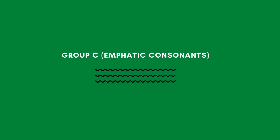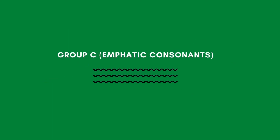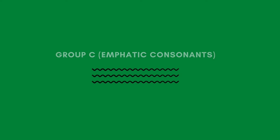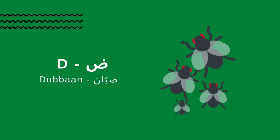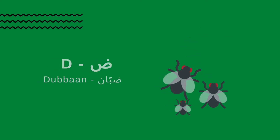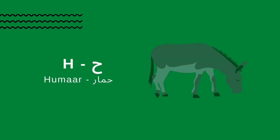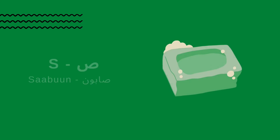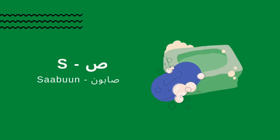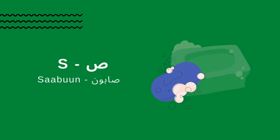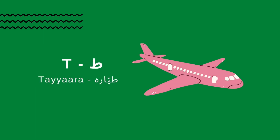Group C. These are emphatic consonants. Dubban, Humar, Saaboon, Taayyara.